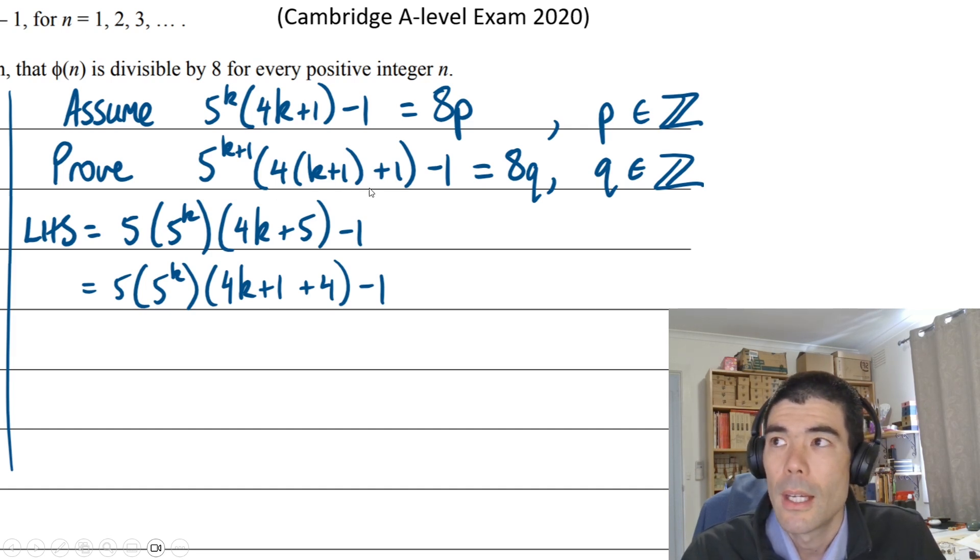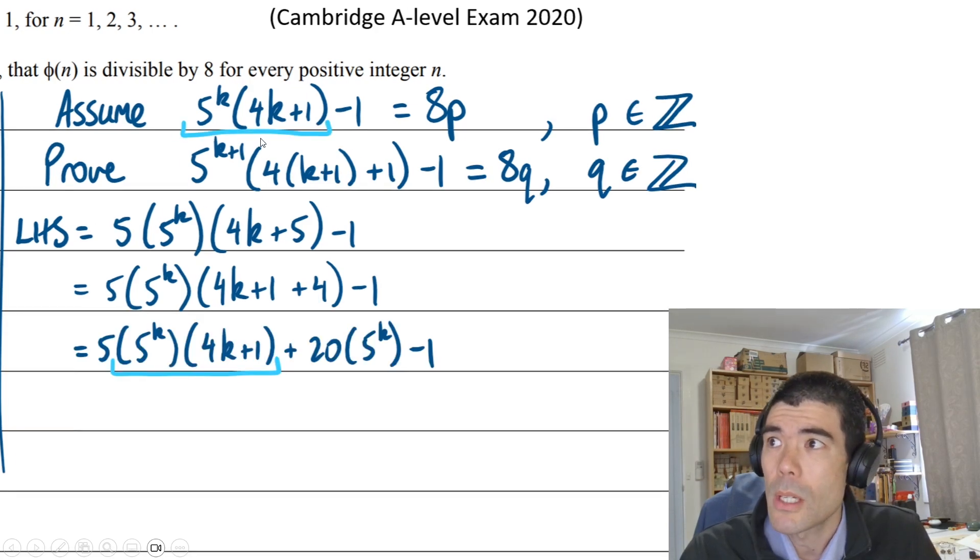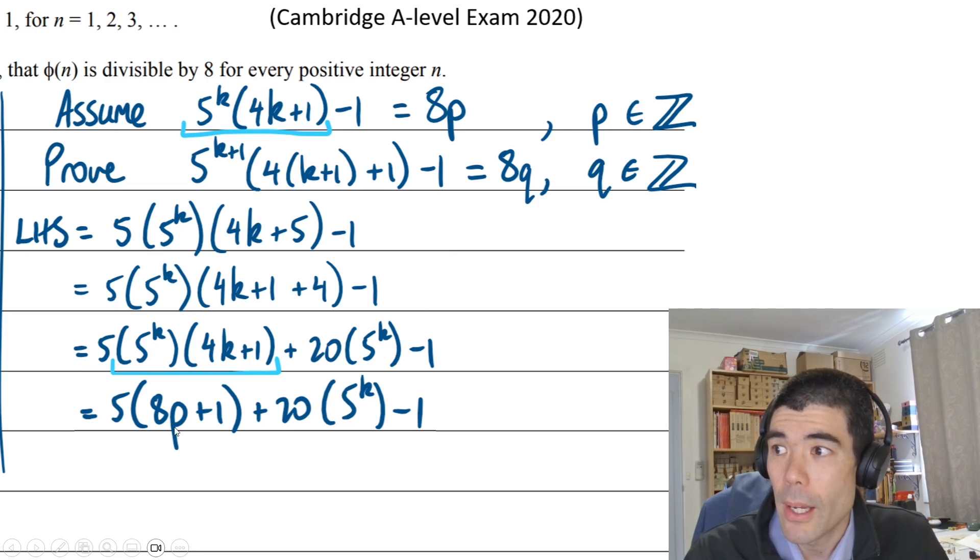Our first logical step is to break up the 5^(k+1) into 5 times 5^k. And this term, 4k + 5, we're going to break up into 4k + 1 plus 4. Then in order to use our assumption, we want to break off this term. We want 5^k times (4k + 1). Now we can look at this term here. By expanding out this bracket, we'll get (4k + 1) times 5^k. That is what we had from our assumption. By expanding out the bracket here, we'll get 5 times 4 is 20 times 5^k. So we can swap this underlined term for 8p + 1. Now we've used our assumptions.